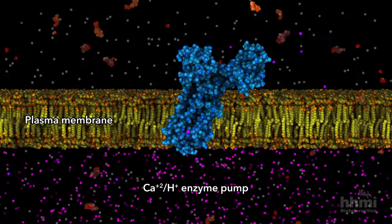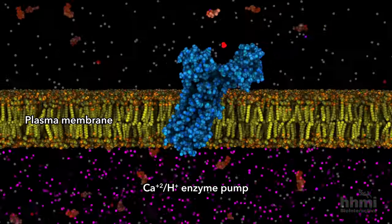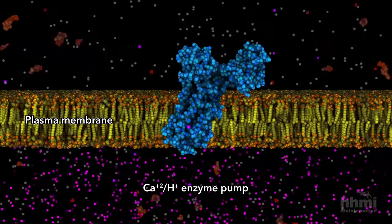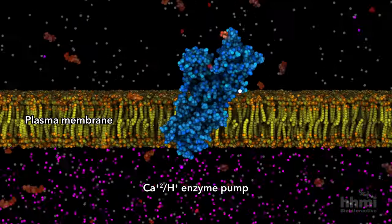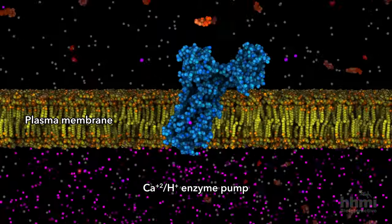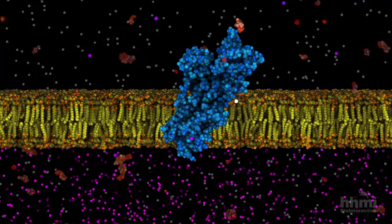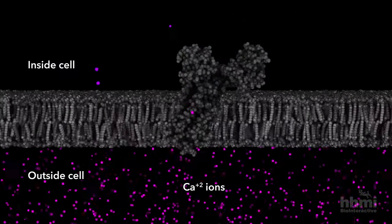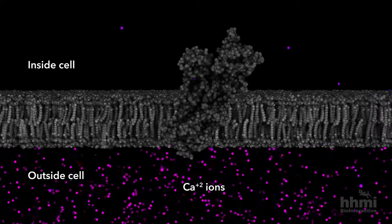To stay alive, your cells depend on enzyme pumps to maintain differences in ion concentration across membranes. The flow of calcium ions controls muscle contraction, nerve transmission, gene regulation, and cell death. Because of enzyme pumps, the concentration of calcium ions inside your living cells is 10,000 times lower than outside.